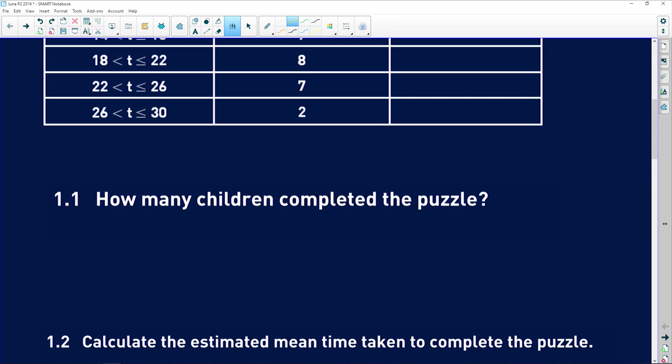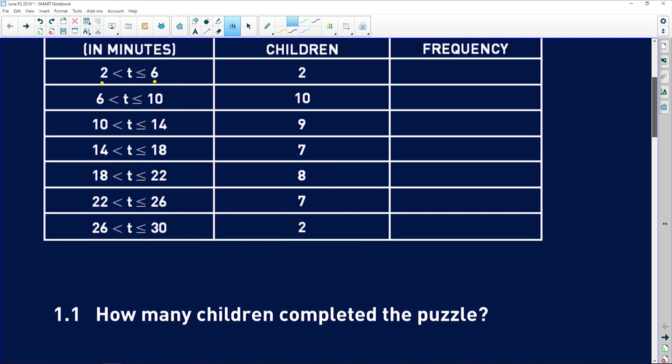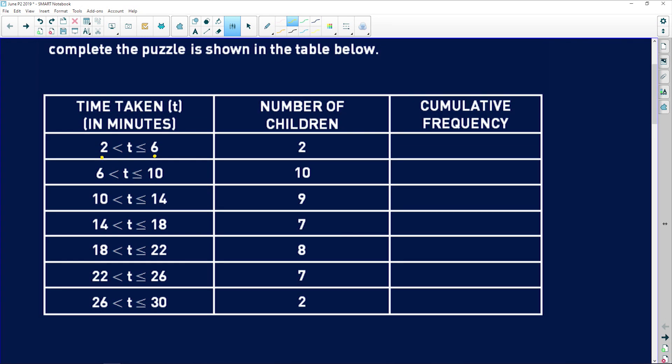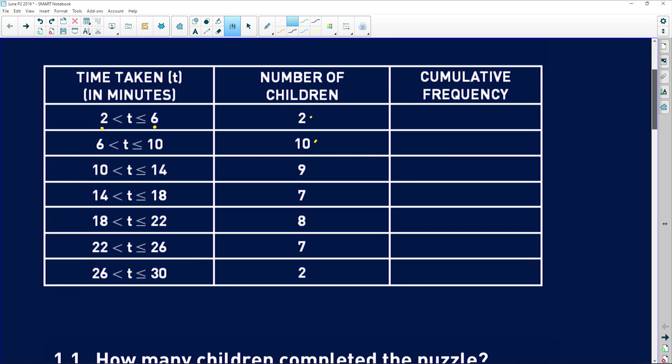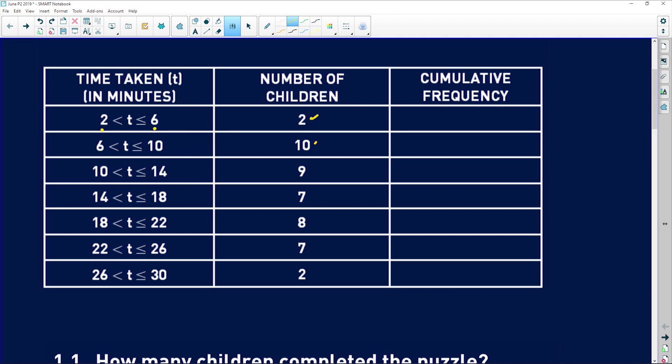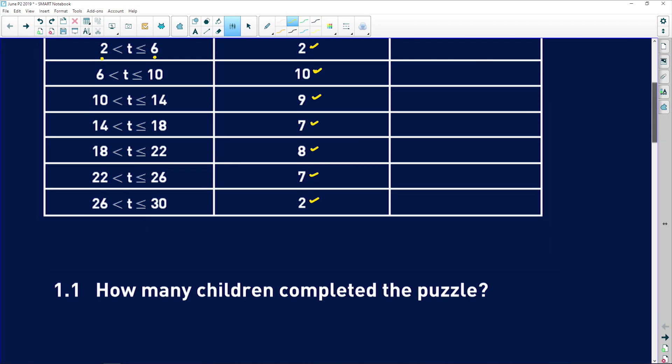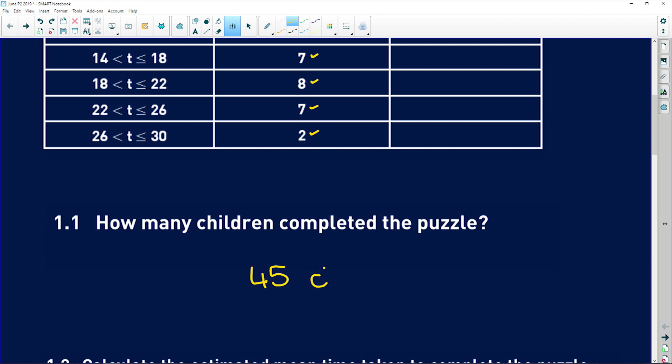Question 1.1 says how many children completed the puzzle. So what happens when you have a big group of children - obviously two of the total children took the first time interval, 10 of the total children took the second. So if we add all of these numbers together we're going to get the total number of children. So 2 plus 10 is 12 plus 9 is 21 plus 7 is 28 plus 8 is 36 plus 7 is 43 and plus 2 is 45. So there were a total of 45 children.